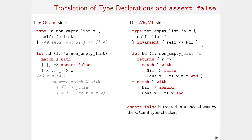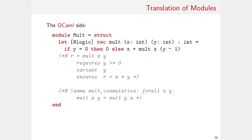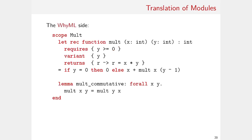More interesting is how we deal with the module systems of OCaml versus Why3. In particular, the Why3 module system is not as expressive as the OCaml one. For instance, a sub-module inside an OCaml file is translated into a scope on the WhyML side. Scopes are for namespace management only and should not be confused with sub-modules — there is no such thing as a sub-module inside Why3.